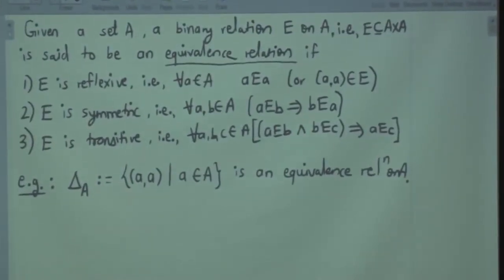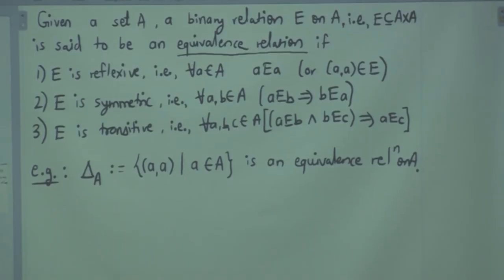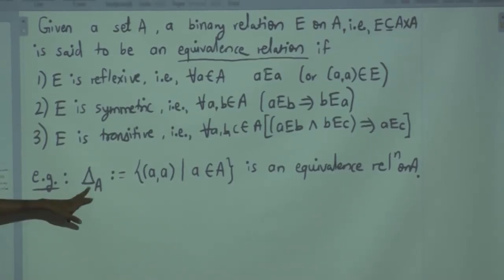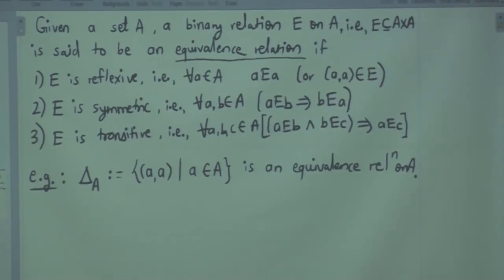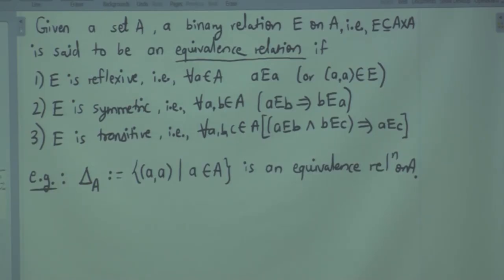One simple relation is the diagonal relation, denoted delta sub A. That is an equivalence relation for any set. Delta sub A is simply the elements on the diagonal. You can check it is reflexive. An equivalence relation cannot be empty unless the set is empty, because these pairs always have to be there.